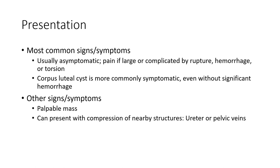Most common signs and symptoms: usually asymptomatic. Pain occurs if large or complicated by rupture, hemorrhage, or torsion. Corpus luteum cysts are more commonly symptomatic, even without significant hemorrhage. Other signs and symptoms include a palpable mass with compression of nearby structures such as the ureter or pelvic veins.